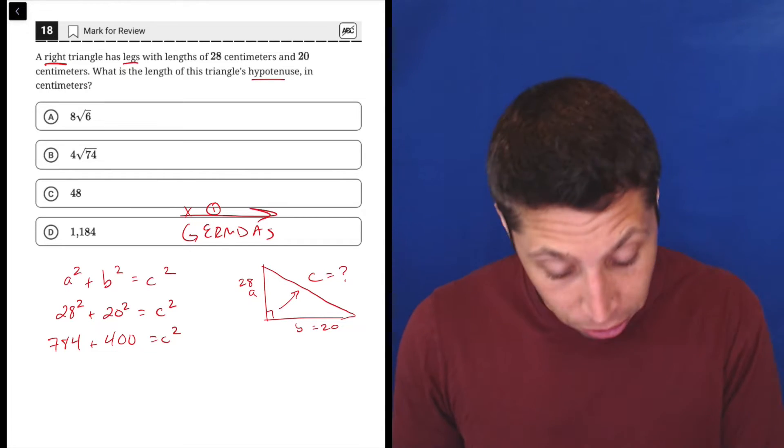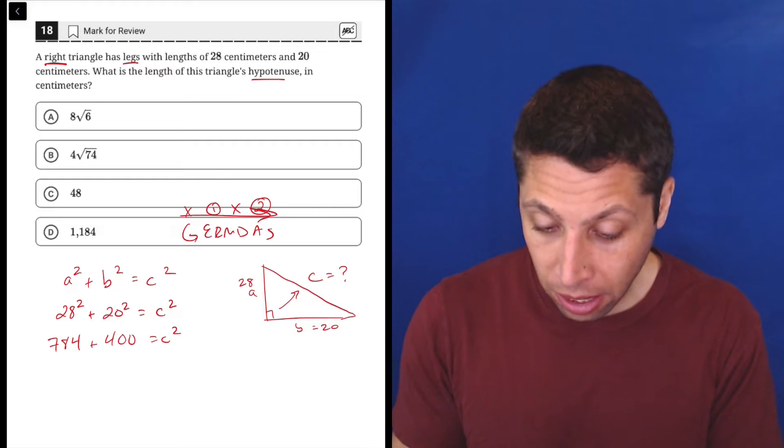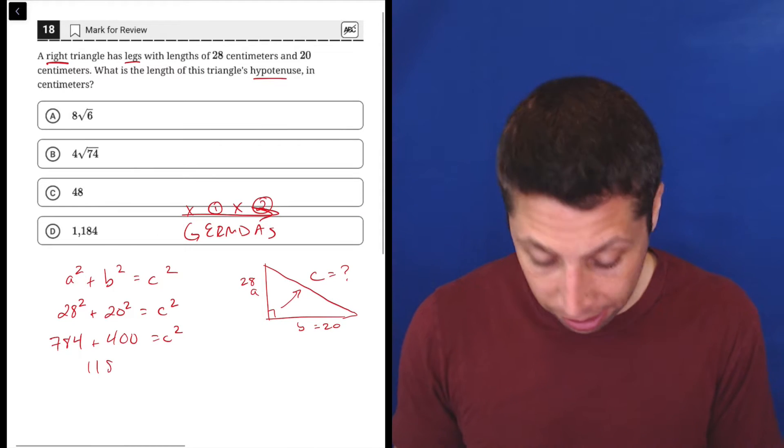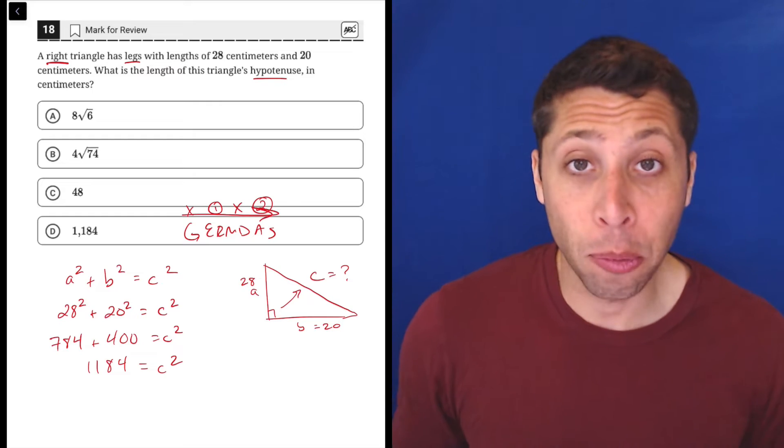Now there's no multiplication or division, so that goes away, but there is addition or subtraction. I can add 784 and 400. So 784 plus 400 is 1184. Okay. Now arithmetic stops. We can't go any further.